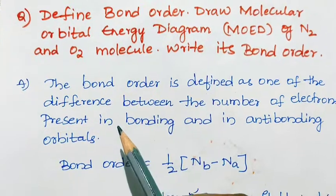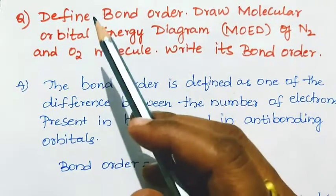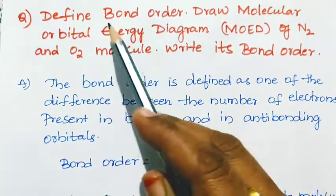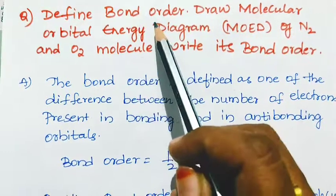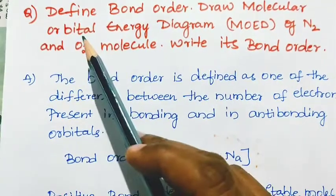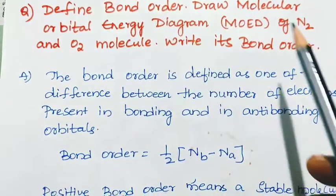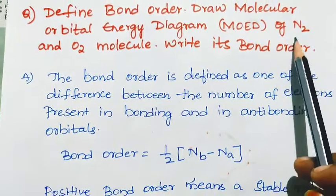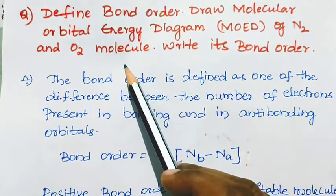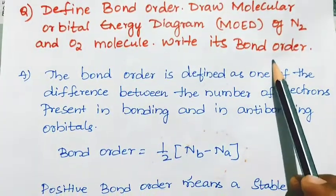Hello students, today we will discuss one more important question: define bond order, draw the molecular orbital energy diagram of nitrogen molecule and oxygen molecule, and write its bond order.